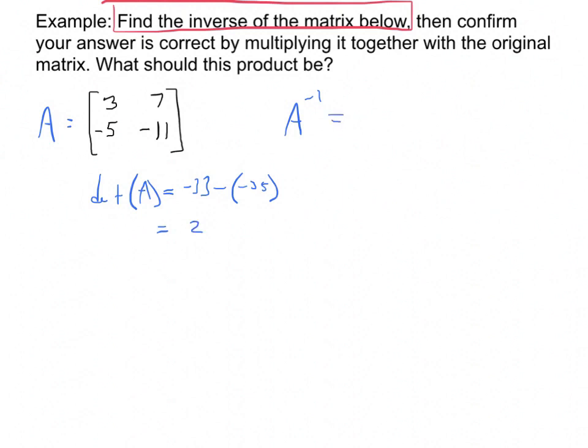So the inverse will be 1 over 2 times... And then inside, I can move these things around. I'm supposed to switch the positions of A and D. And then I'm supposed to change the sign of B and C.